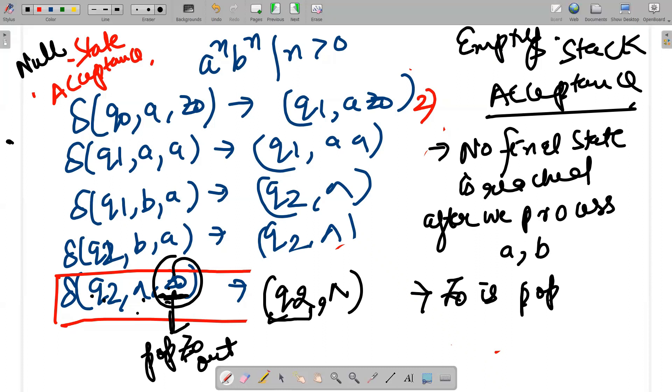The last operation is also a pop operation, whereas in final state acceptance it was a do nothing operation.